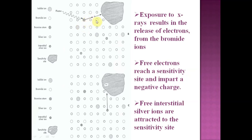These free electrons reach a sensitive site or latent image site and impart a negative charge to it. Before this, the site was neutral — it only had sulfur impurities. When the photon hits the bromide ion, it releases an electron which reaches the sensitive site and imparts a negative charge, making it negatively charged.